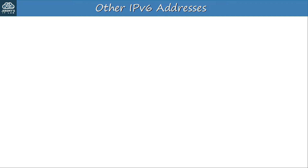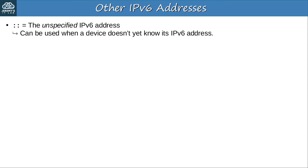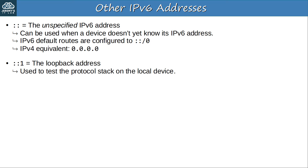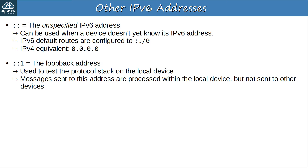There are two other IPv6 addresses to cover. The unspecified IPv6 address is all 0s, usually written as double colon — it can be used when a device doesn't yet know its IPv6 address. IPv6 default routes are configured to ::/0. The IPv4 equivalent is 0.0.0.0. The IPv6 loopback address is ::1 — 127 bits of 0 followed by a single 1. It's used to test the protocol stack on the local device; messages sent to this address are processed within the local device but not sent to other devices. The IPv4 equivalent is the 127.0.0.0/8 range. IPv6 uses just a single address rather than wasting a huge block.